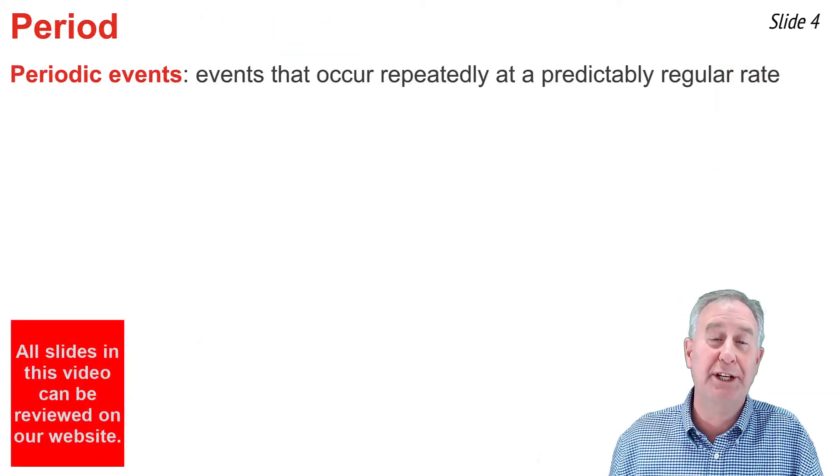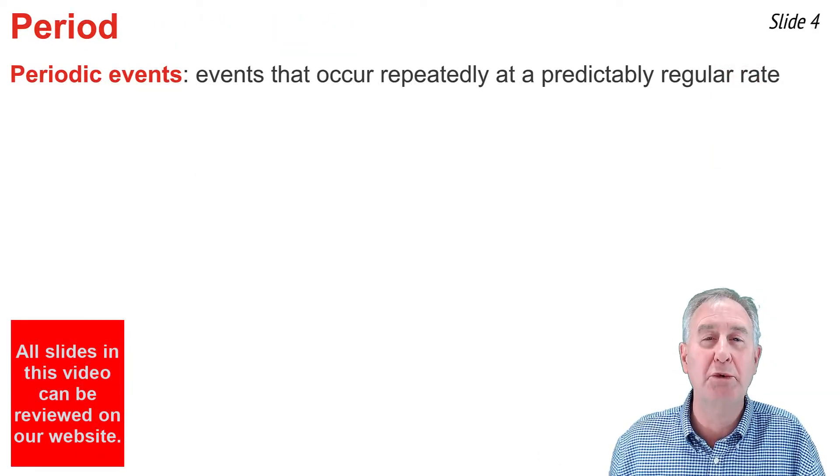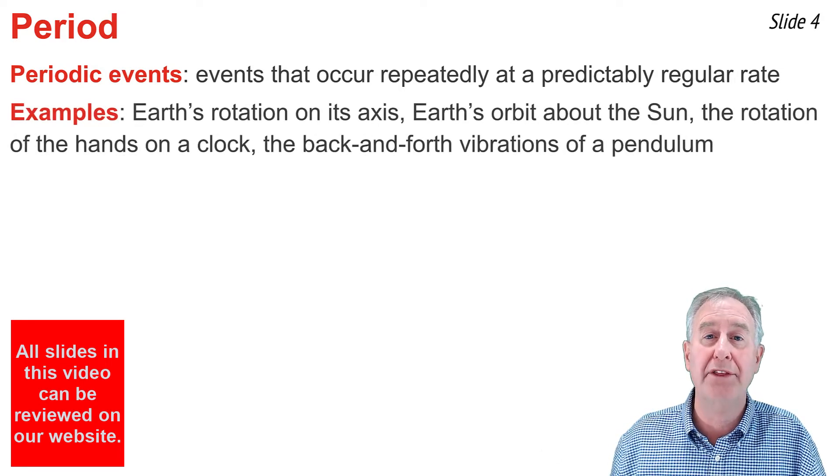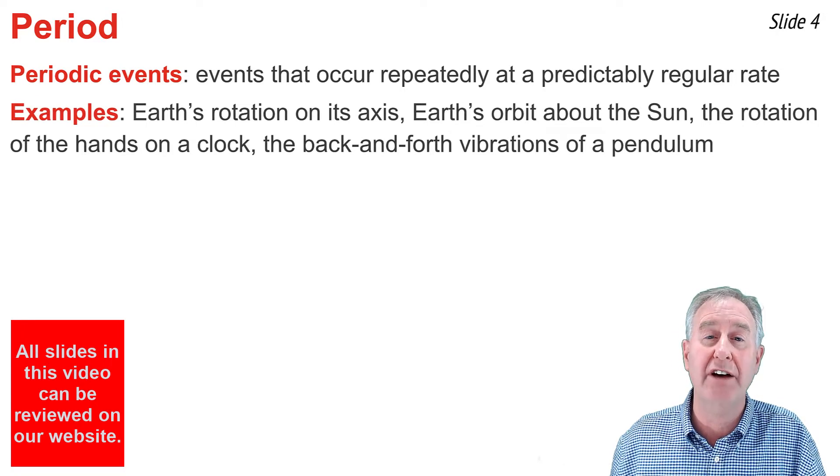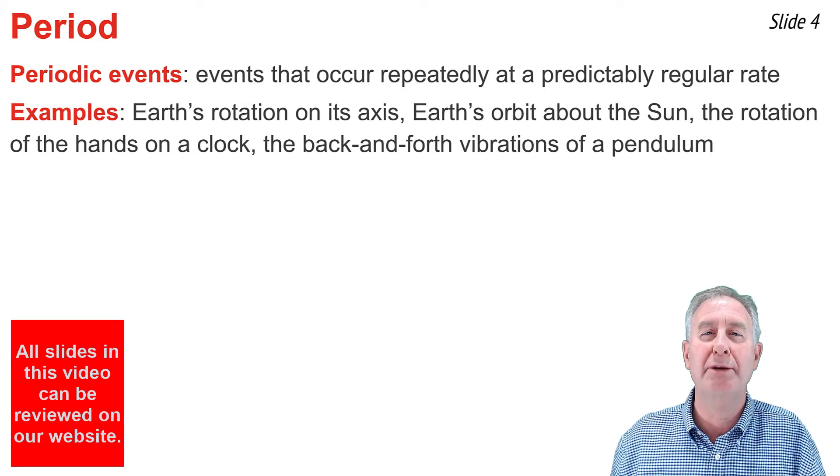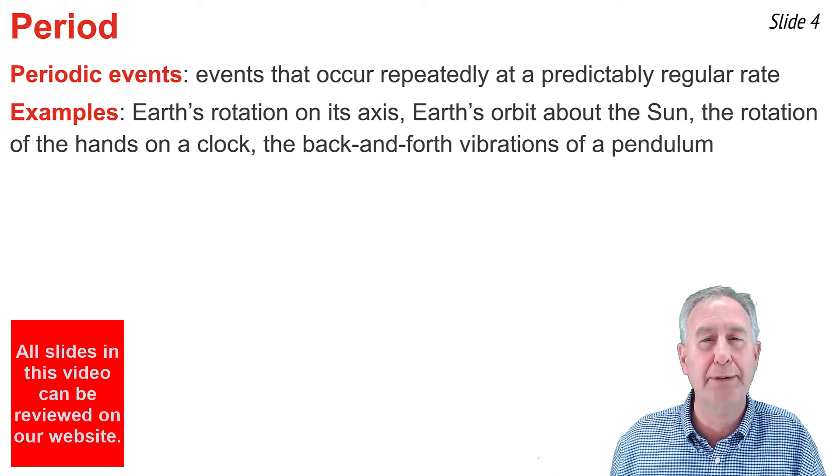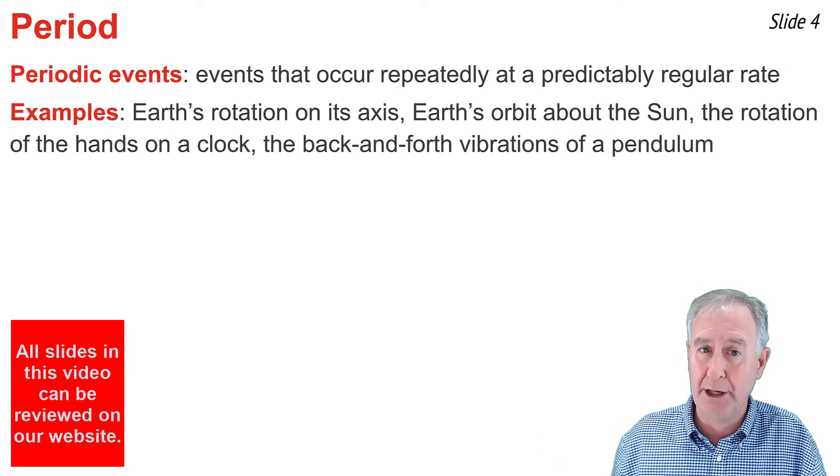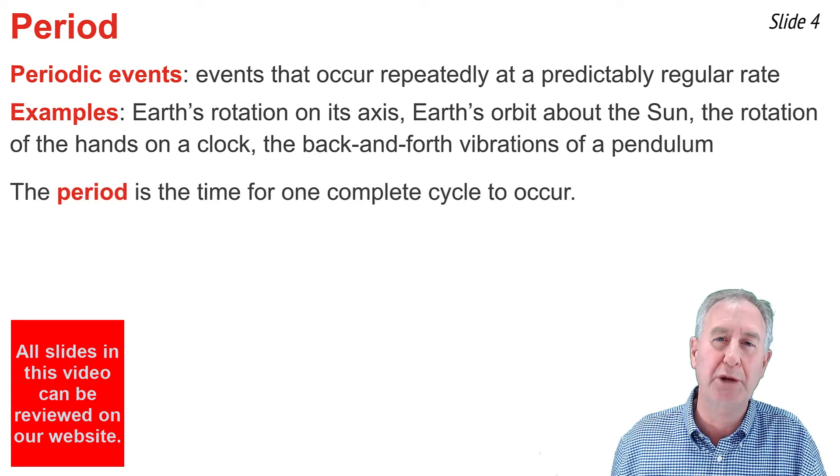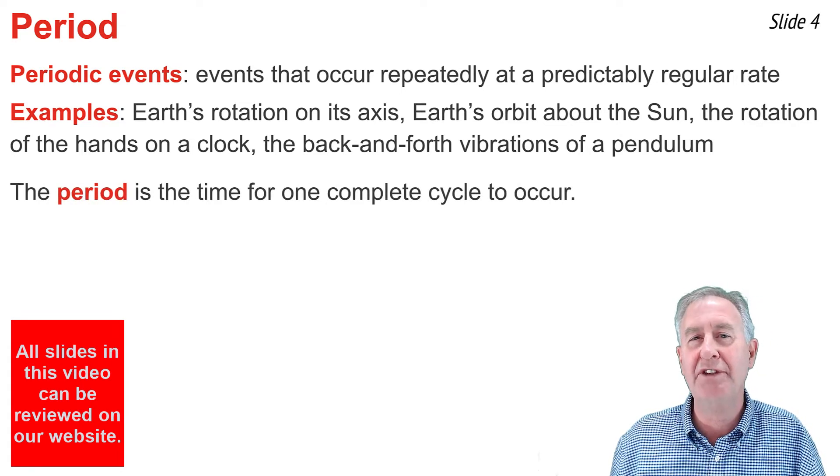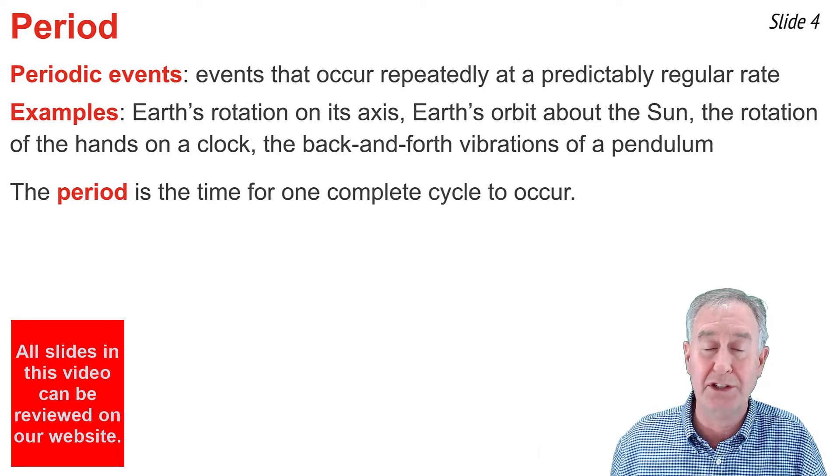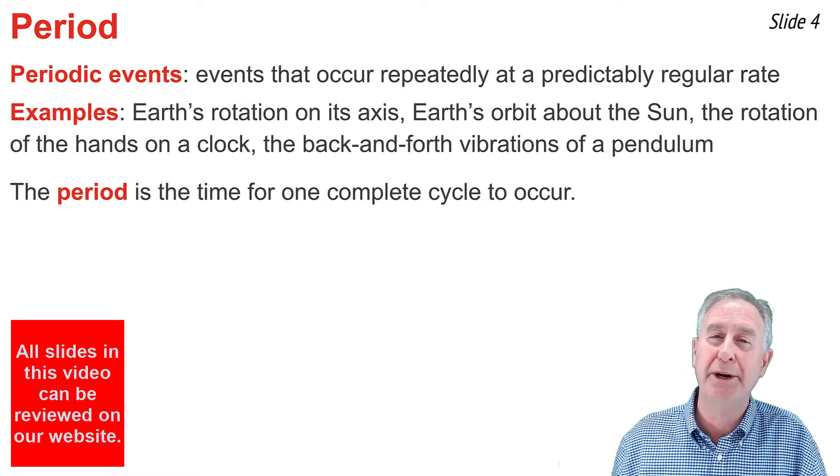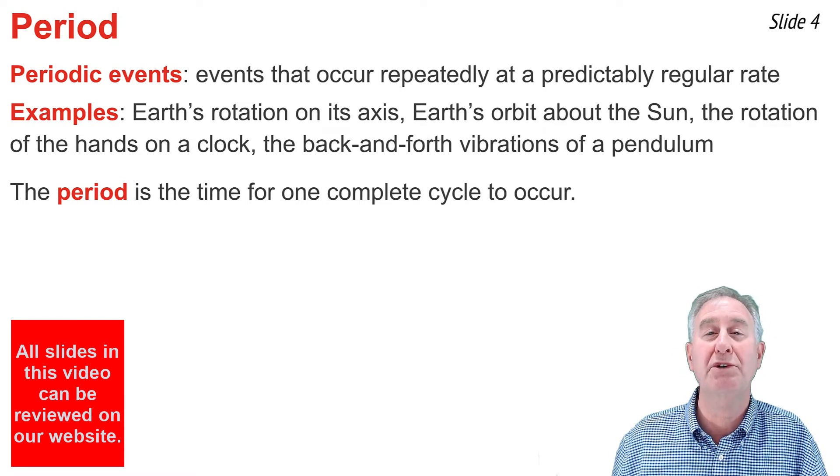Periodic events are events that occur repeatedly at a predictably regular rate. The rotation of the earth on its axis, the orbit of the earth about the sun, the rotation of the hands of a clock, and the back and forth vibrations of a pendulum bob are all examples of periodic events. Periodic events can be described by a period. The period is defined as the time to complete one cycle. In the case of the earth rotating on its axis, the period is 24 hours, and in the case of the earth orbiting the sun, the period is 365.25 days.